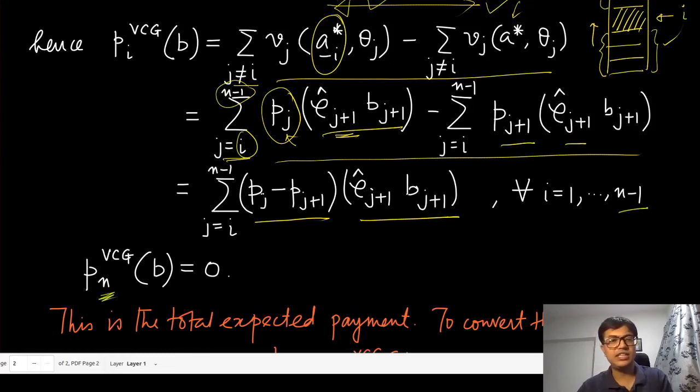The last agent in this list will always have a zero payment. If that agent is removed, the allocation of any of the other agents do not change. Therefore both these things will essentially cancel out and they will have only zero.